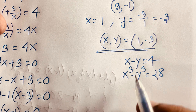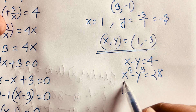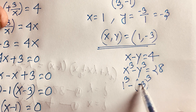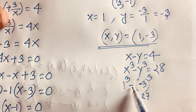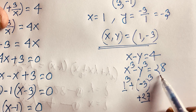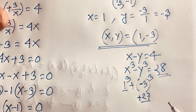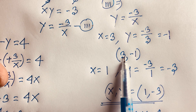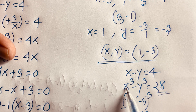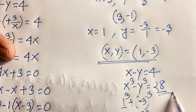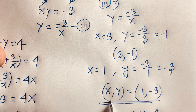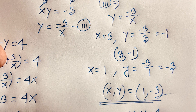For x equals 3 and y equals negative 1: 3 cubed minus negative 1 cubed equals 27 minus negative 1 equals 27 plus 1 equals 28. Both solutions are verified. Our final answers are: x equals 3 with y equals negative 1, and x equals 1 with y equals negative 3.